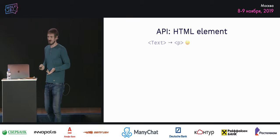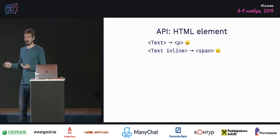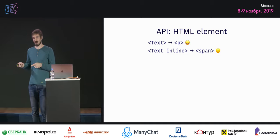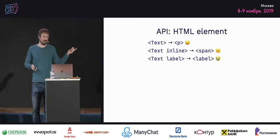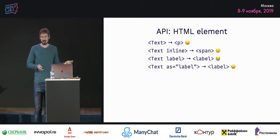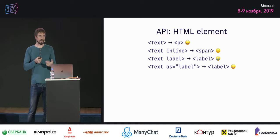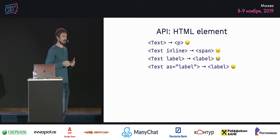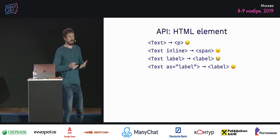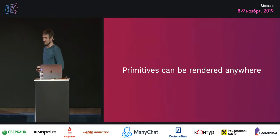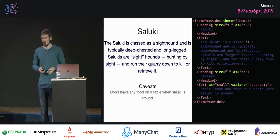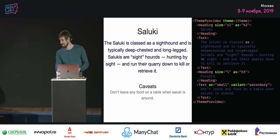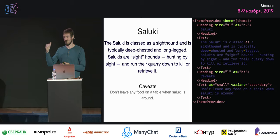For HTML elements: we don't know where the component will be used, so we need a way to render inline text. We could create inline variants, but imagine doing that for every HTML tag. The same lesson from variants applies — use a prop like 'as' or 'is'. Luckily, all CSS-in-JS libraries already provide this, so you can give a way of rendering any HTML tag. Primitives can be rendered anywhere.